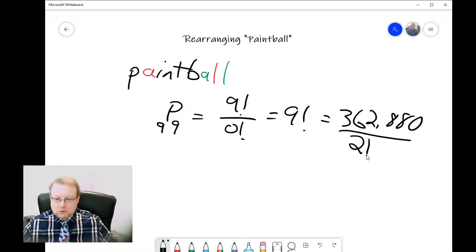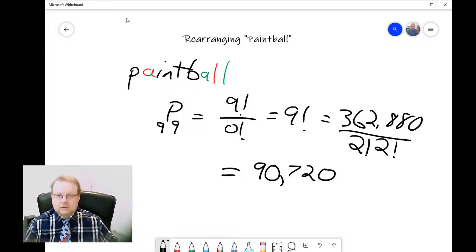That leaves us with 362,880 divided by 4. So 36 divided by 4 is 9, 4 doesn't go into 2, it does go into 28, and then it goes into the 8 as well. So there are 90,720 ways to rearrange the letters in paintball. This is going to lead us to our general approach for solving letter problems.